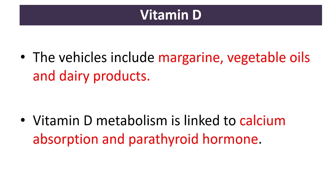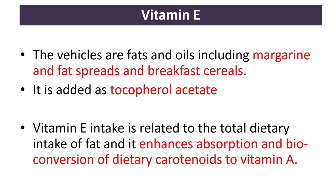For vitamin D, the vehicles include margarine, vegetable oils, and dairy products. Vitamin D metabolism is linked to calcium absorption and parathyroid hormone. For vitamin E, the vehicles are fats and oils including margarine, fat spreads, and breakfast cereals. It is added as tocopherol acetate. Vitamin E intake is related to total dietary fat intake, and it enhances absorption and bioconversion of dietary carotenoids to vitamin A.